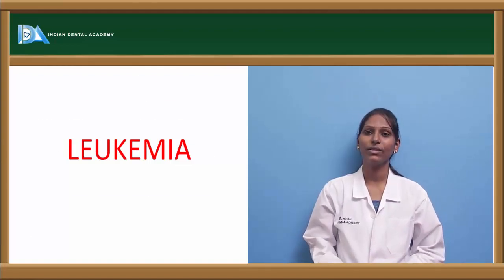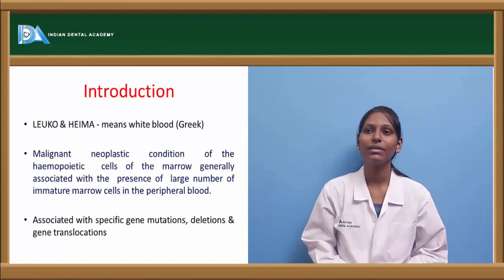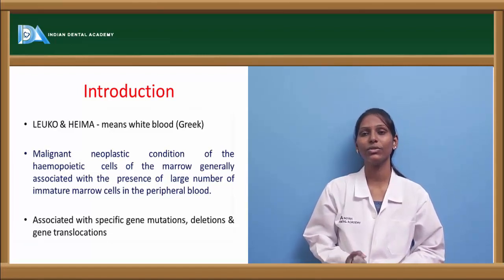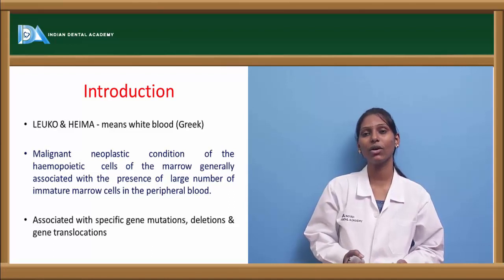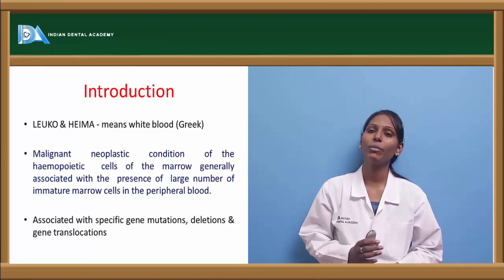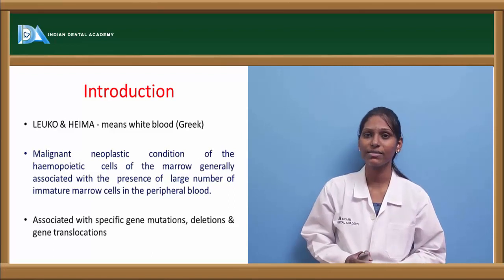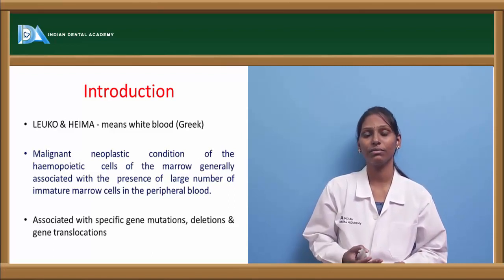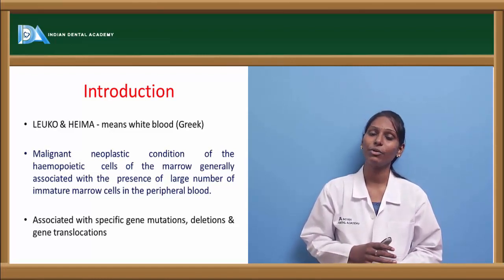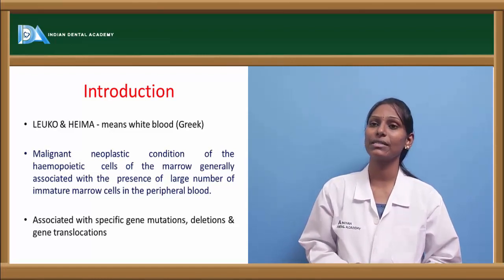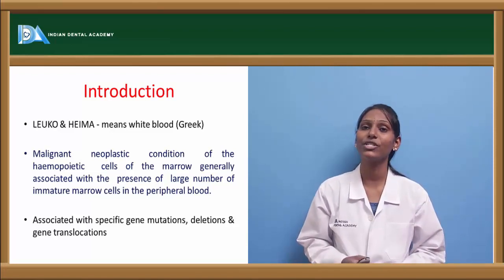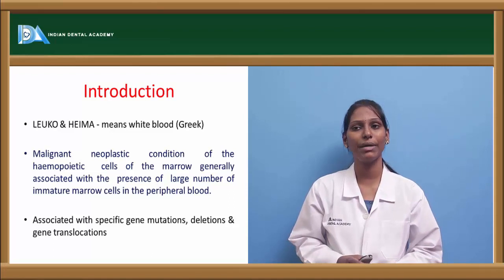The topic for discussion is leukemia. In Greek, 'leuco' means white and 'heme' means blood, so leukemia is synonymously called white blood. It is defined as an abnormal proliferation of leukocytes where immature marrow cells are seen in the peripheral blood. It is a malignant neoplastic condition of hematopoietic cells of the marrow, generally associated with the presence of large numbers of immature marrow cells in the peripheral blood.